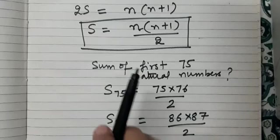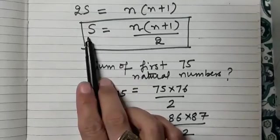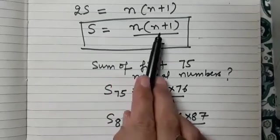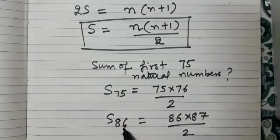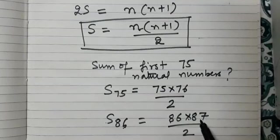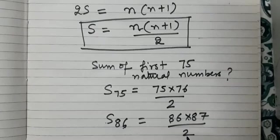We have used the formula, sum of first n natural numbers is n into n plus 1 divided by 2. So S86 is 86 into 86 plus 1 that is 87 divided by 2. You can simplify this and get the answer. I hope it is clear to you.